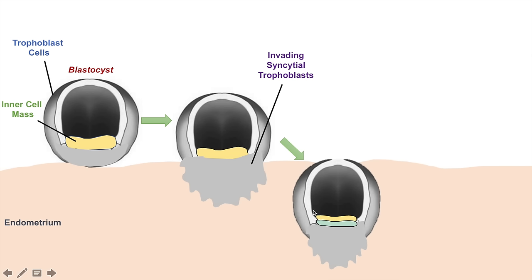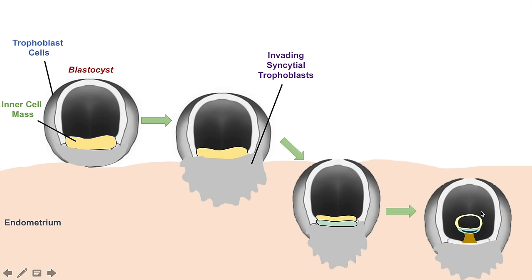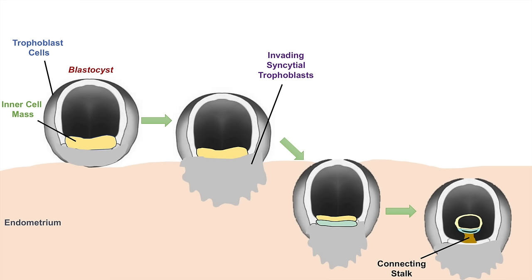Now the inner cell mass will begin to differentiate into two layers — that bilaminar disc we were talking about earlier. Those two layers will continue to develop and will form cavities within each other, and they will be connected to the rest of the cells via something known as a connecting stalk. This will allow those two layers to stay connected to the rest of the organism, including the trophoblast cells. This process of gastrulation occurs at these two layers within the organism.